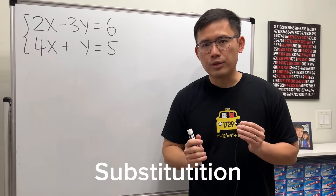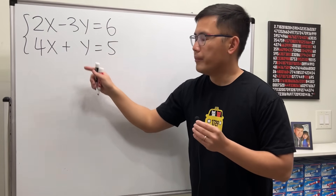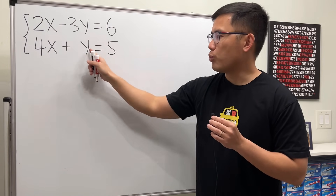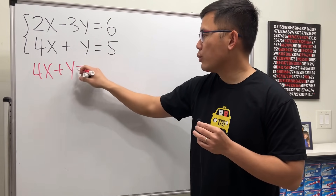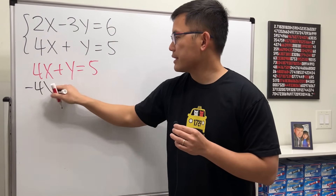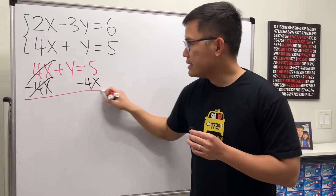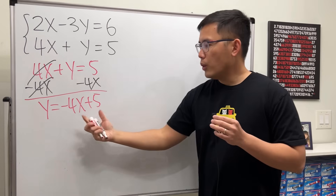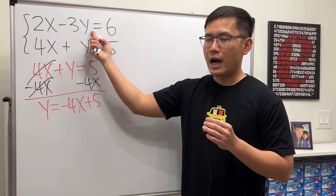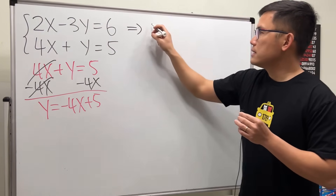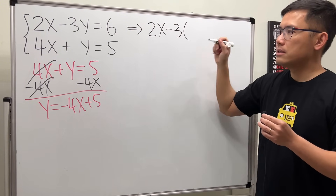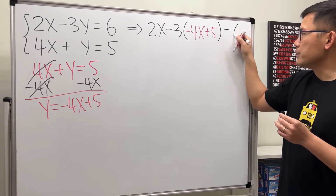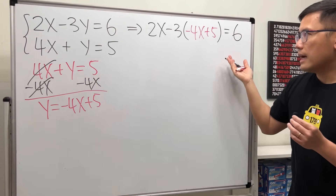The second method is called substitution. What you want to do is isolate the variable and then plug that expression into the other equation. The easiest variable to isolate is y, because we just have y. So this is 4x plus y equals 5. We can just minus 4x on both sides and get y equals negative 4x plus 5. Then we will plug this expression into the first equation for the y. This will give us 2x minus 3 times the y, so we have negative 4x plus 5, and that is equal to 6. This equation has just x, so we can solve it regularly.